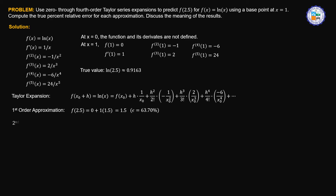For the second order approximation, we add another term that requires the second derivative. The second order approximation is equal to 0 plus 1 times 1.5, and adding that additional second-derivative term, the result is 0.375. Comparing that to the true value, the error is 59.07%.